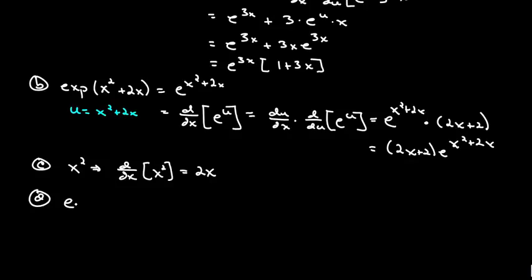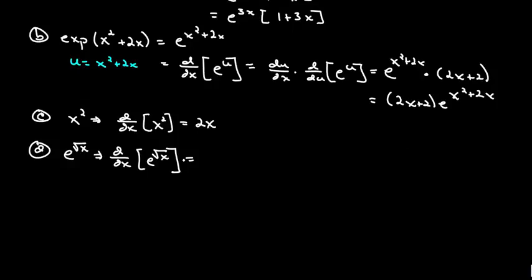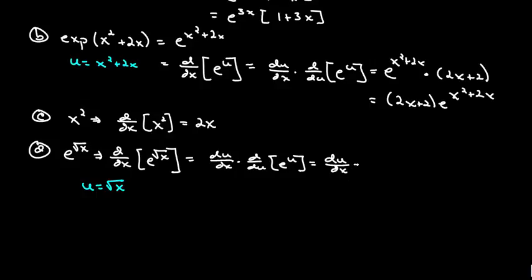For D, we have e raised to the square root of x, and so what we want is the derivative of that guy. We're going to go ahead and make a substitution here again. Let's let u be equal to the square root of x. So this will be du/dx times d/du of e to the u, which we know is du/dx times e to the u. And du/dx is one over 2 square roots of x. So this will be equal to e to the square root of x over 2 square roots of x.